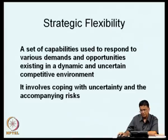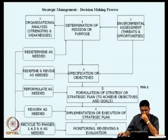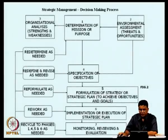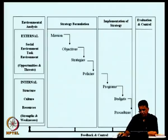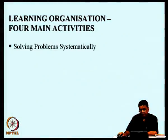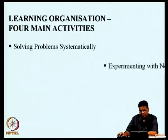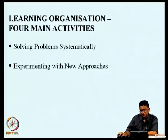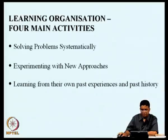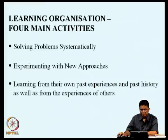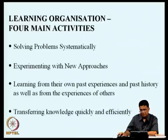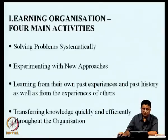We defined strategic flexibility — a set of capabilities used to respond to various demands and opportunities existing in a dynamic and uncertain competitive environment — involving coping with uncertainty and the accompanying risks. Then we looked at the strategic management process through a block diagram and a step-and-ladder diagram. Then we looked at what is meant by a learning organization and listed its four main activities: solving problems systematically, experimenting with new approaches, learning from their own past experiences and history as well as from the experiences of others, and transferring knowledge quickly and efficiently throughout the organization.